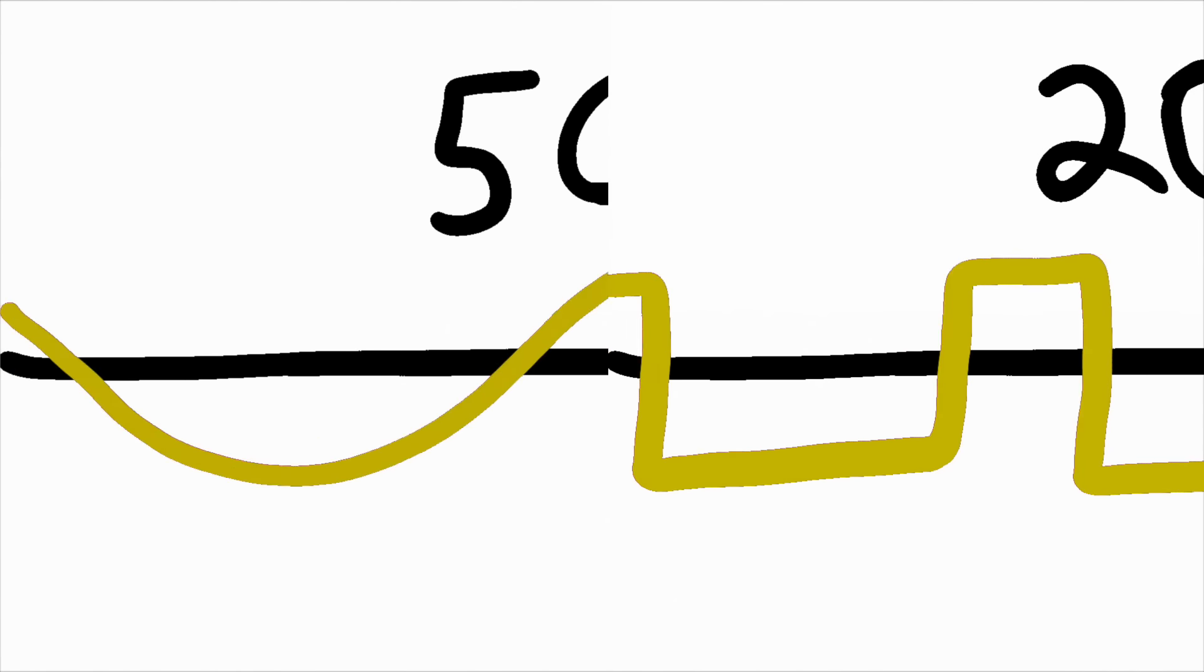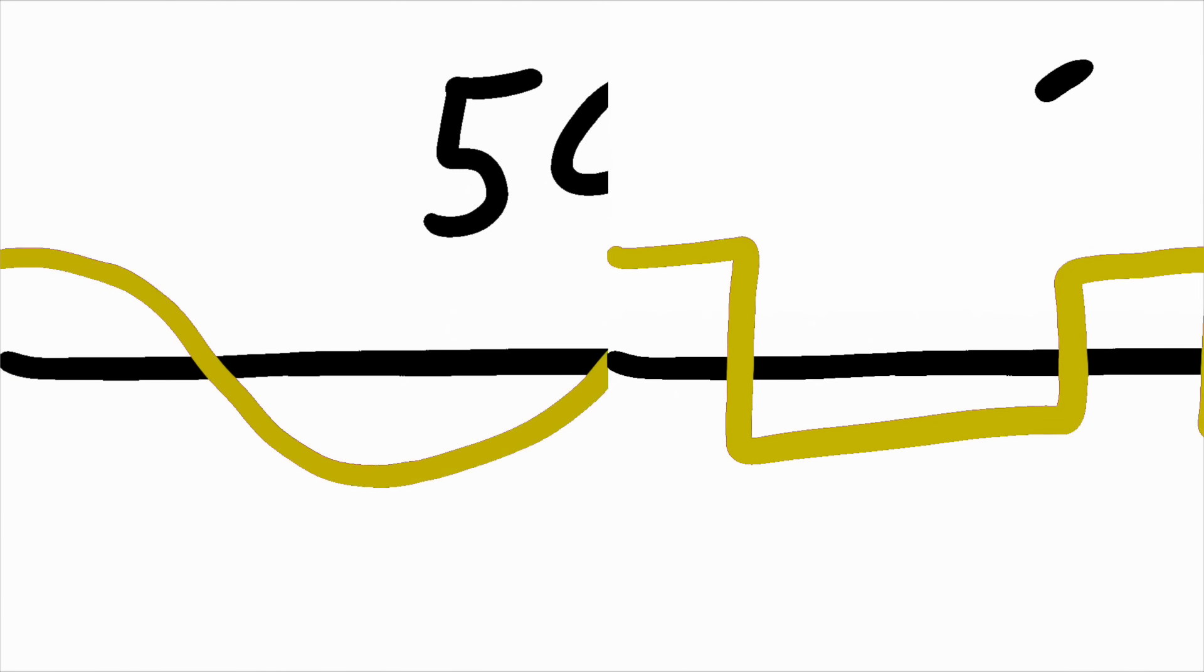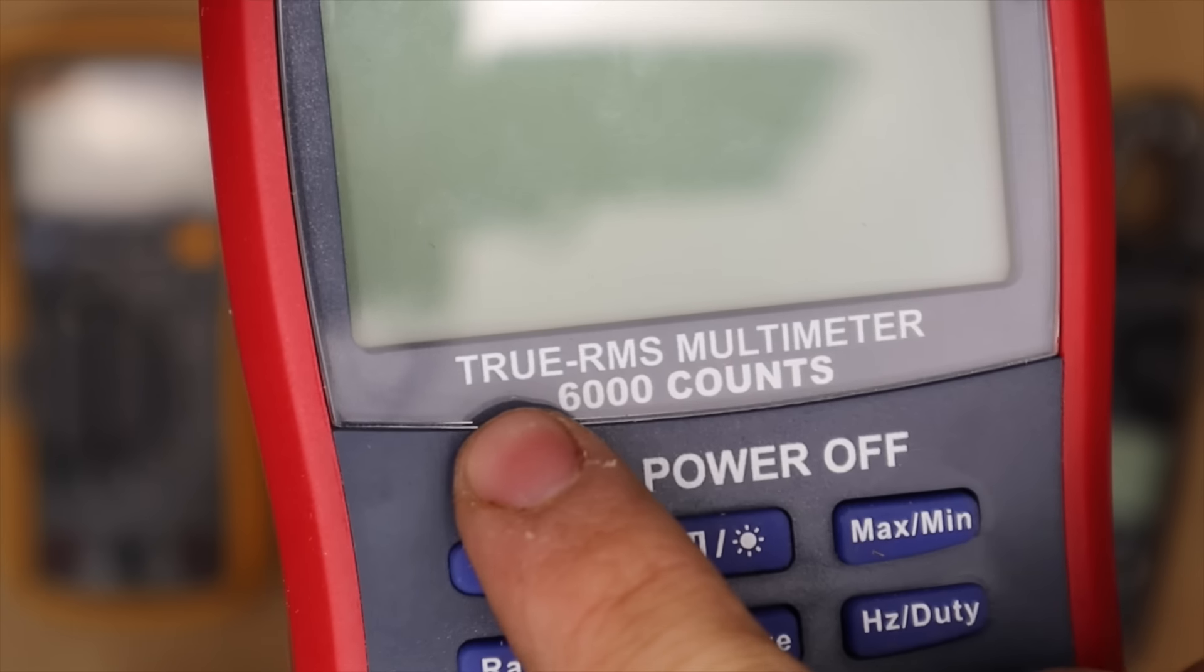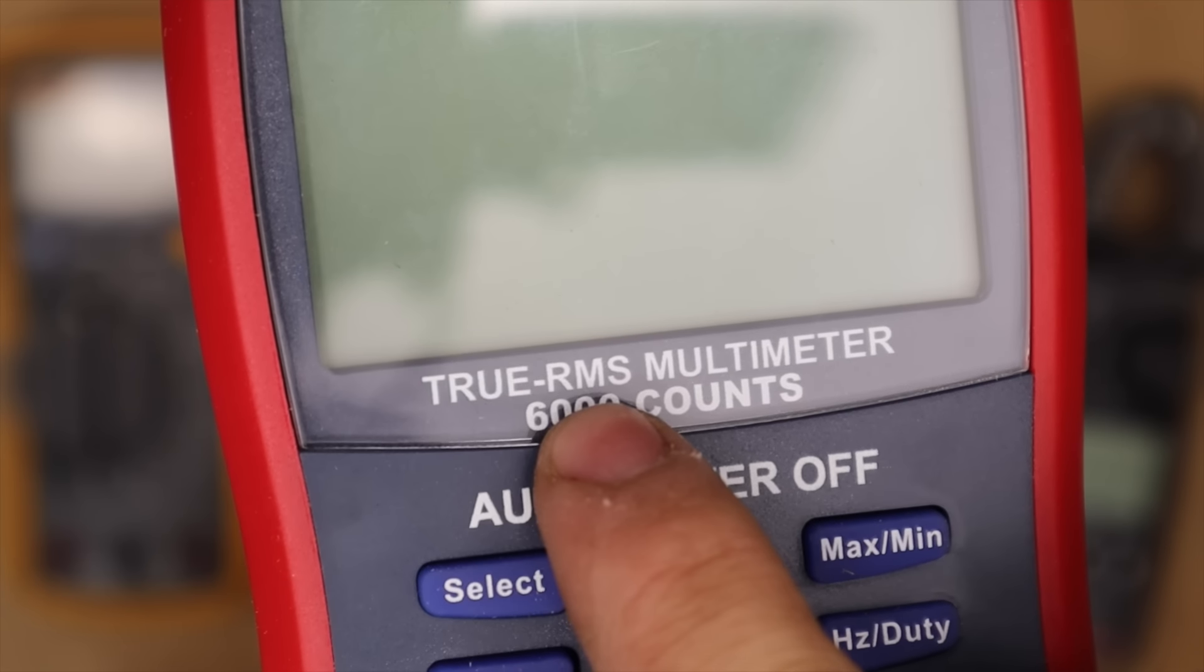Now some currents can often have waves that distort the readings and cause up to a 40% error rate when reading. However, meters that have true RMS correct for this, so that's an important aspect to consider.